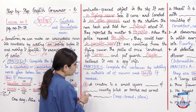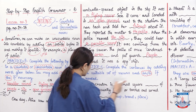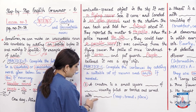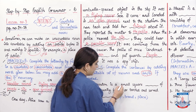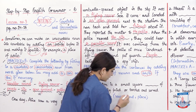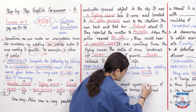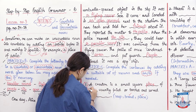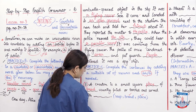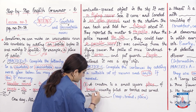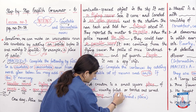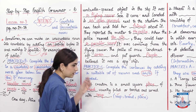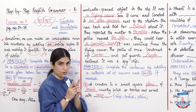Number one: 'A crouton is a small square piece of bread, usually fried or toasted, and served with soup.' A crouton is a small square piece of bread that is served with soup.